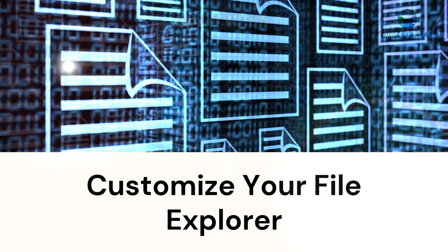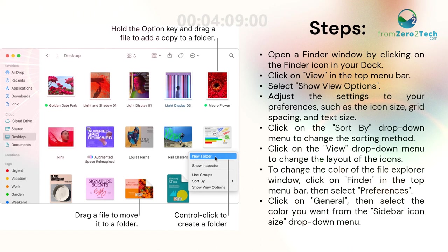Customize your file explorer. Open a Finder window by clicking on the Finder icon in your dock. Click on View in the top menu bar and select Show View Options. Adjust the settings to your preferences, such as the icon size, grid spacing, and text size. Click on the Sort by drop-down menu to change the sorting method. Click on the View drop-down menu to change the layout of the icons. To change the color of the file explorer window, click on Finder in the top menu bar, then select Preferences. Click on General, then select the color you want from the sidebar icon size drop-down menu.